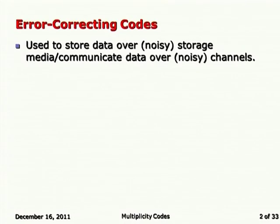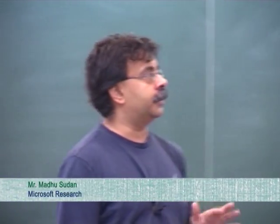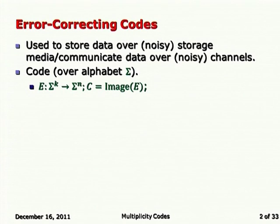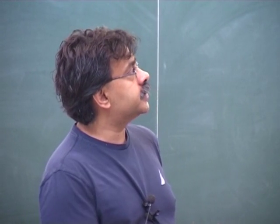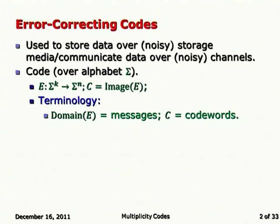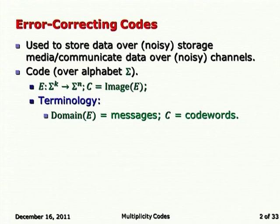Let me start with a very gentle introduction to error correcting codes. These are combinatorial objects that we use to store and recover information under the presence of noise. There is an encoding function which takes some message — the domain of this encoding function is what we call the set of messages. This encoding function is an injective map going into a much larger space; n is much larger than k. The set of things that you map to that actually have pre-images are what we call the codewords.